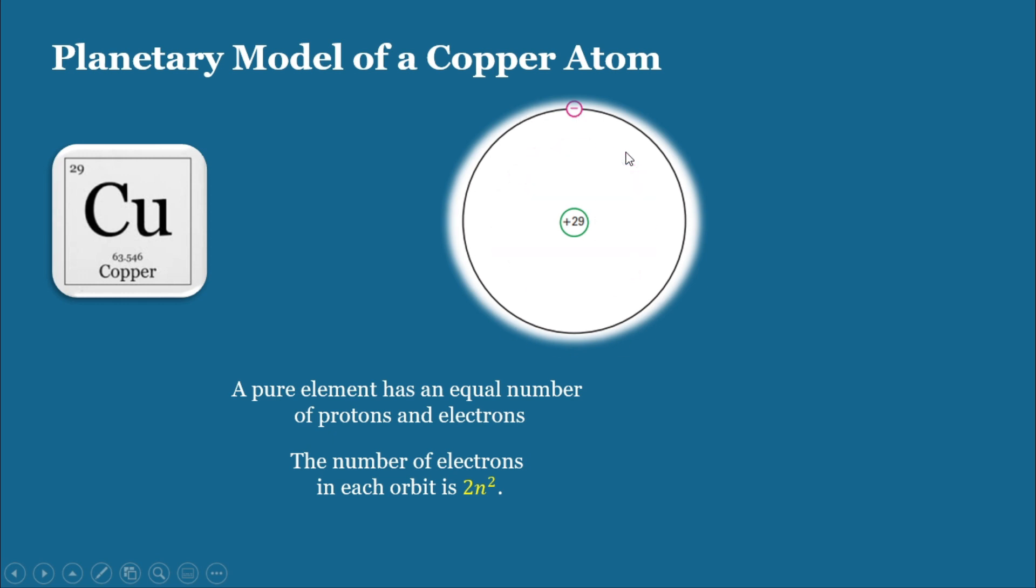We call this outermost orbit the valence. The electron present in this orbit is called a valence electron. The number of valence electrons will determine the electrical property of an atom. Remember what we discussed previously: outermost orbit, atomic structure, electrical property.